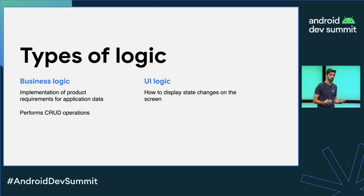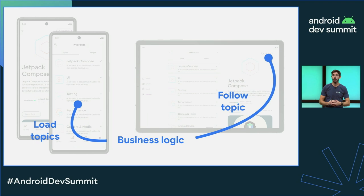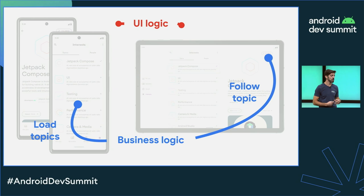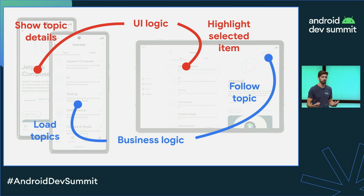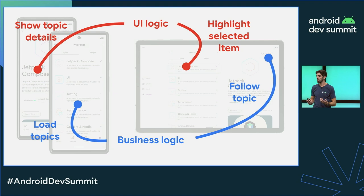Depending on the UI configuration, the UI logic might be different. Looking at the interest screen again, loading topics or following a particular one could be considered business logic. Showing topic details or highlighting a selected item could be considered UI logic. You can see how showing topic details might involve navigation on a mobile device, or could mean showing an element next to another on a tablet — it depends on the UI configuration.